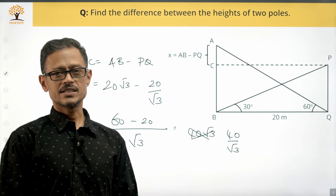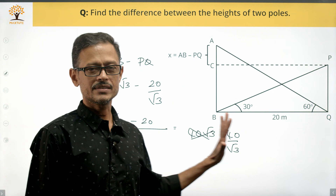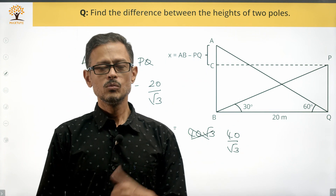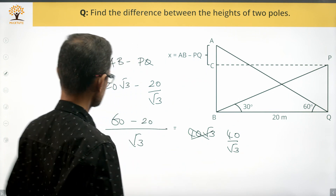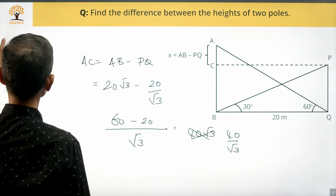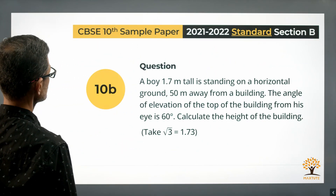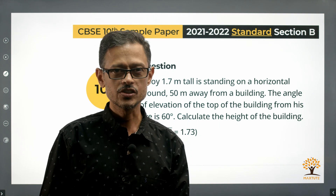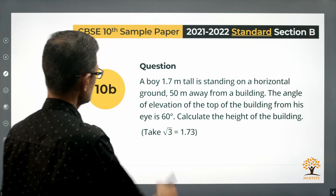So 40/√3 meters is the answer for the difference in heights. Pretty straightforward, easy question. This question has an internal choice, so let's look at the second one.